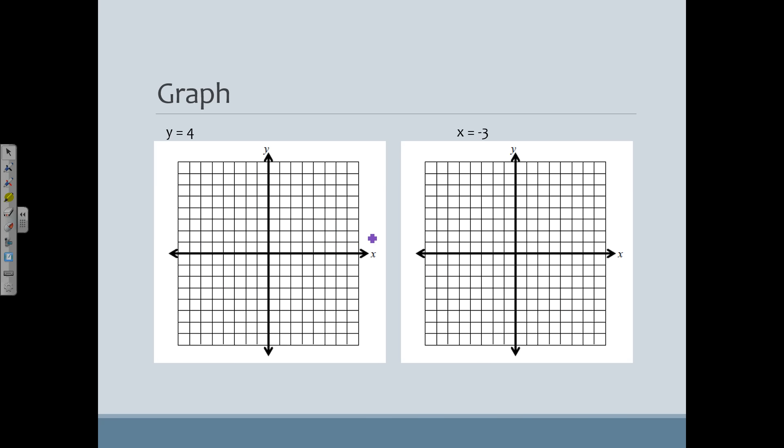Alright. Now we have these two special graphs. This is y equals 4. There's no x. So what that means is all of my y values are going to be 4. So if I put a point here, this is (0, 4). If I put a point here, that's (3, 4). 5, 4. I can go over here, negative 2, 4. So all my y values are the same, so this graphs a horizontal line.